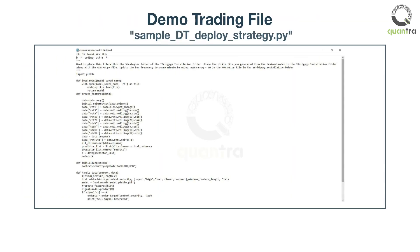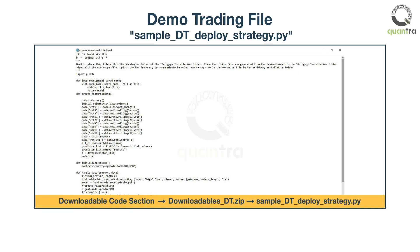We have also provided the sample code to paper trade or live trade the decision tree model strategy on Interactive Brokers TWS. To access this sample code, go to the last unit of the downloadable code section, download the downloadables-dt.zip file, and then copy the file sample-dt-deployer-strategy.py in the iBridgePy strategies folder and run it.